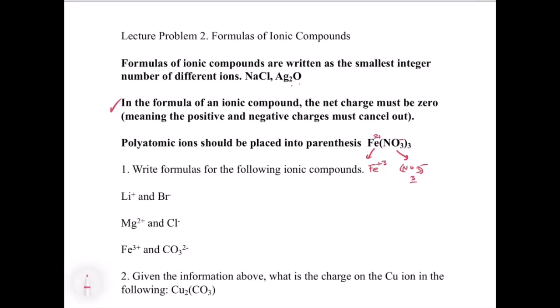The really important thing is to memorize the polyatomic ions and know the charges from Table 2.4. There's what we call the crisscross rule. With lithium+ and Br−, for example, lithium is in group one so it has a +1 charge, and bromide is in the halogen group so it gets a −1 charge. We have one positive and one negative, so that balances out as lithium bromide.